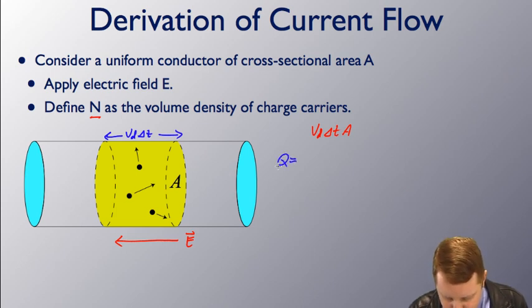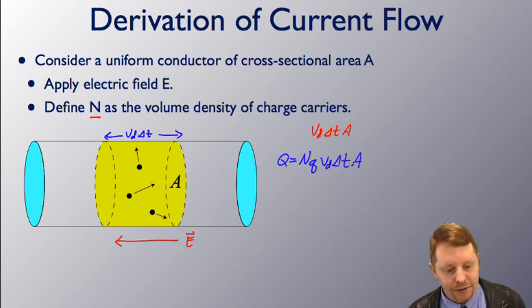If we also multiply the charge carriers by the charge on each charge carrier, we could get the total charge passing that area in that unit time. So q, the total charge passing A in that unit time, is going to be the volume charge density of carriers times the charge on each carrier, or q, or in lots of places you'll see that written with a little e, especially for the AP curricula.